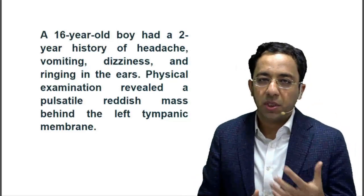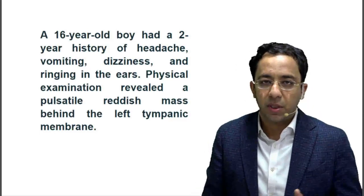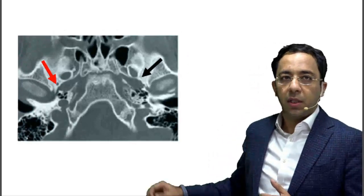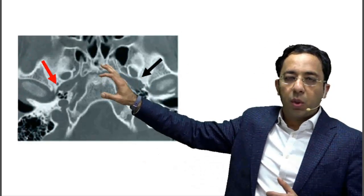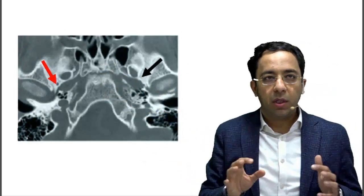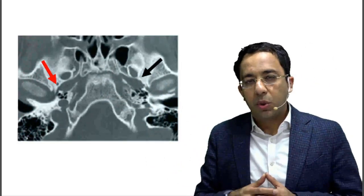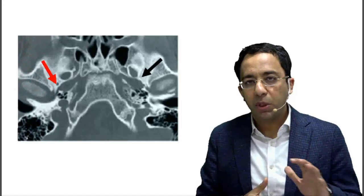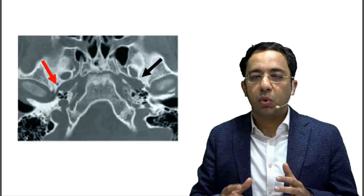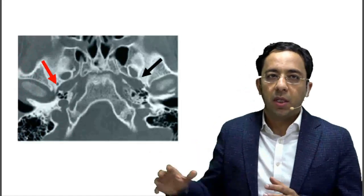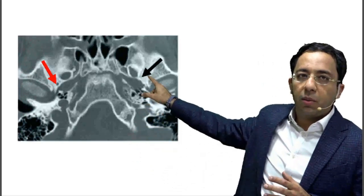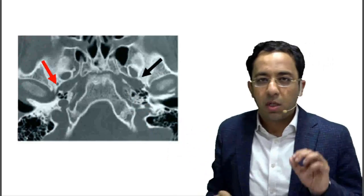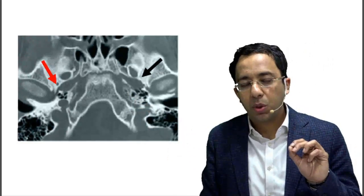A CT scan — specifically an HRCT of the temporal bone — was advised. Looking at this section, findings are marked with a red arrow and a black arrow. On the right side, the red arrow points to the foramen spinosum, through which the middle meningeal artery passes. On the left side, marked with the black arrow, there is no foramen spinosum — it is absent.